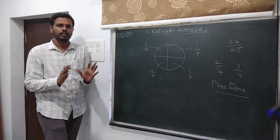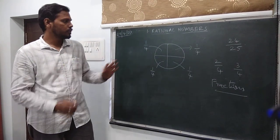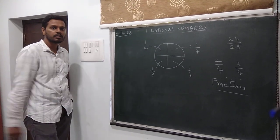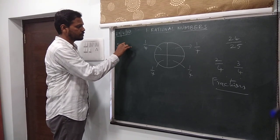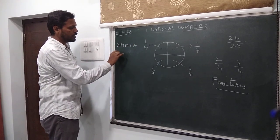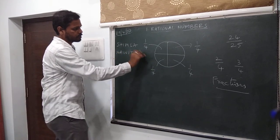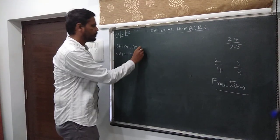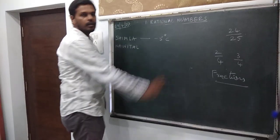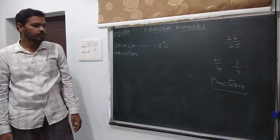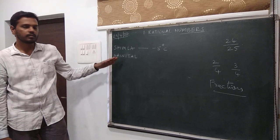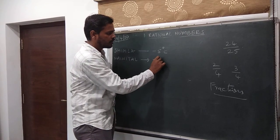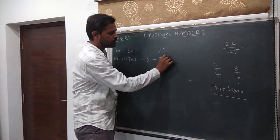Now these are numbers which you are familiar with, and we call them fractions. So till now the known numbers are natural numbers, whole numbers, integers, and fractions. Now suppose the temperature of Shimla is minus 5 degrees on a given day in winter, and the temperature of another city is half the temperature of Shimla. Then that temperature would be minus 5 by 2 degrees Celsius.